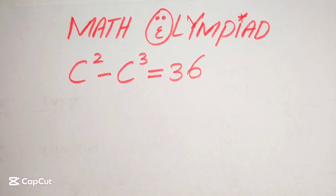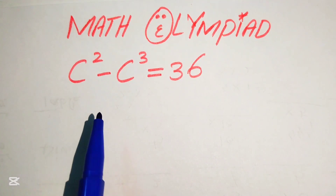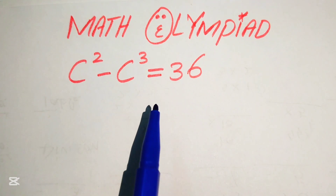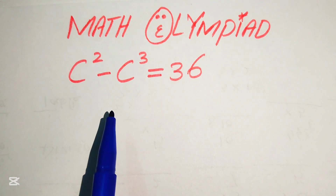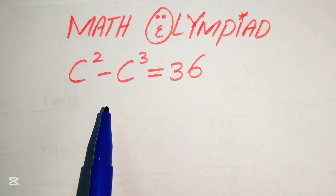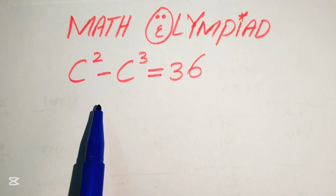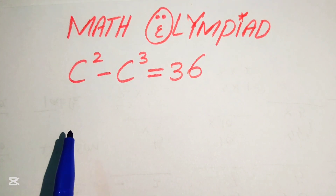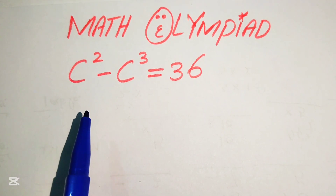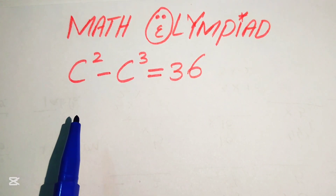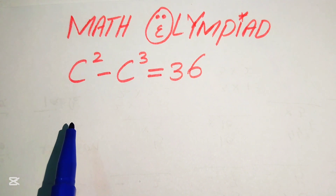Hello everyone, welcome to this nice algebra problem. We have c squared minus c cubed equals 36 and we solve this problem for the values of c. This is a third-order equation, meaning the highest exponent is 3, so this equation has three roots. We will find all three roots of this equation.